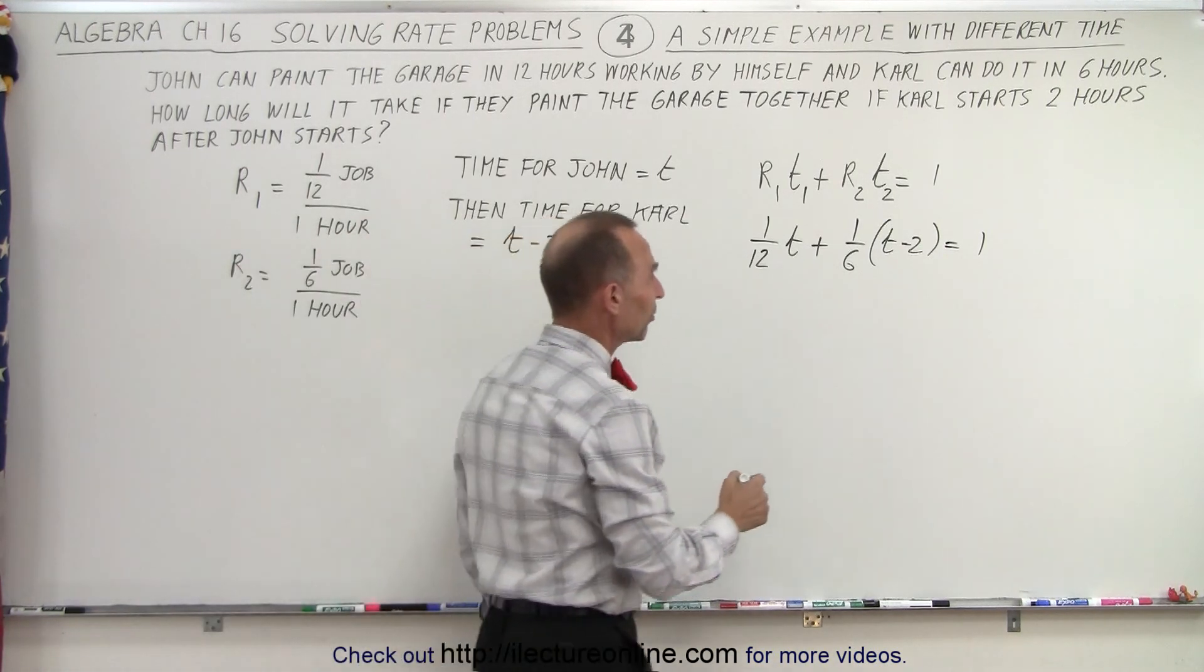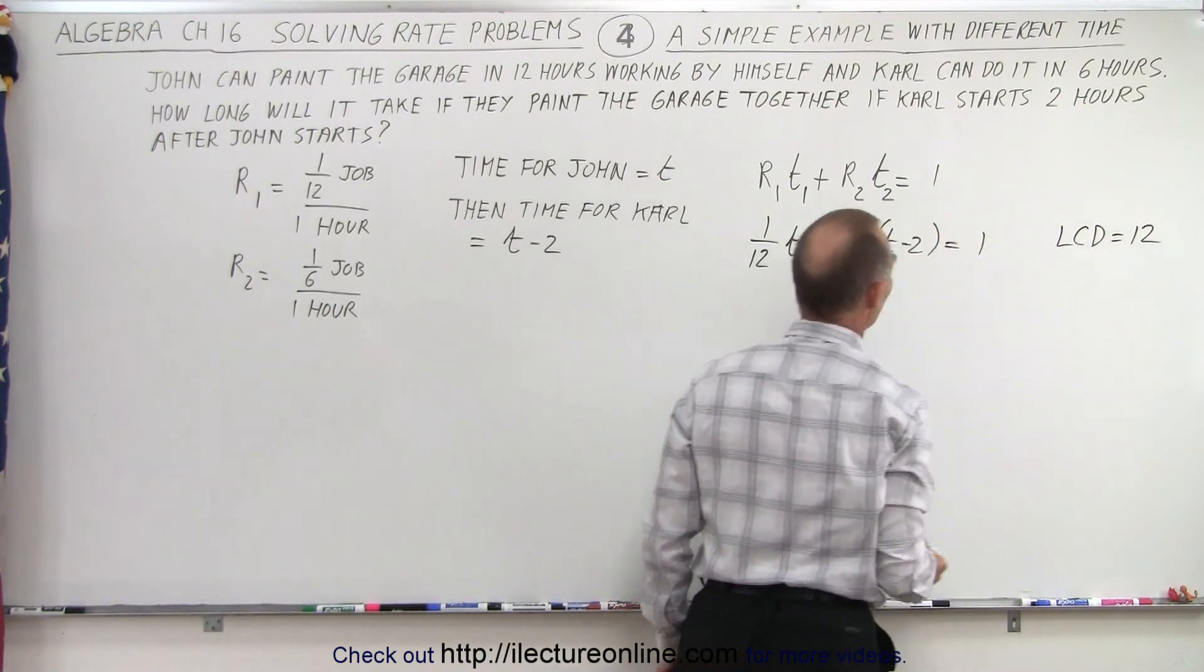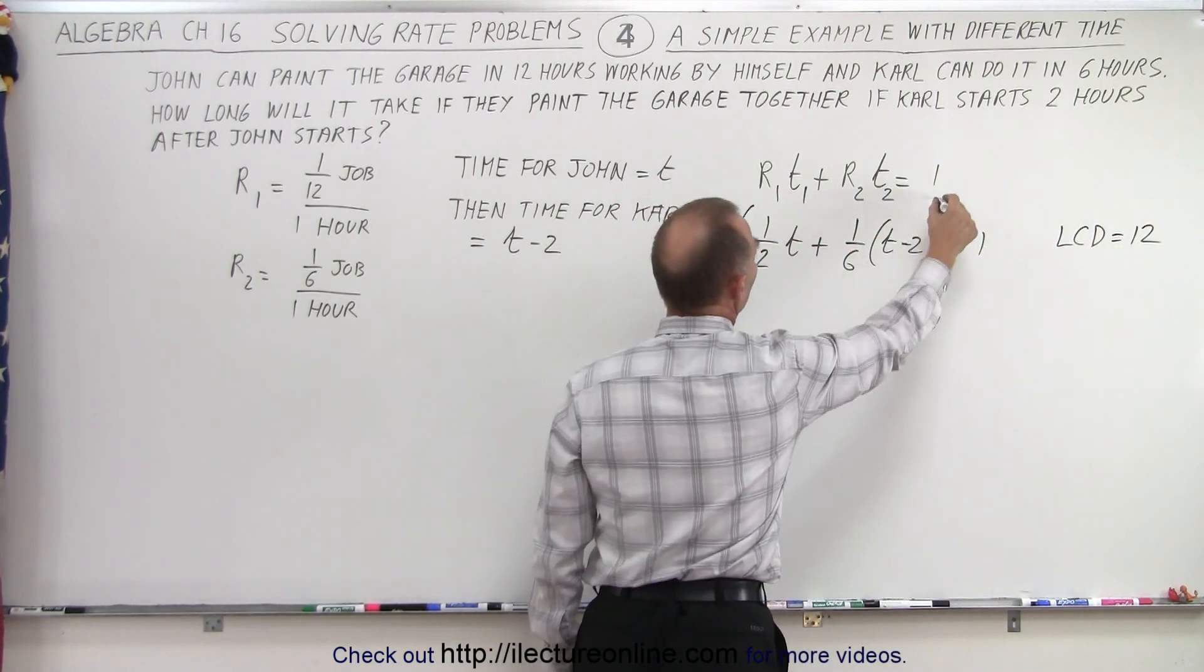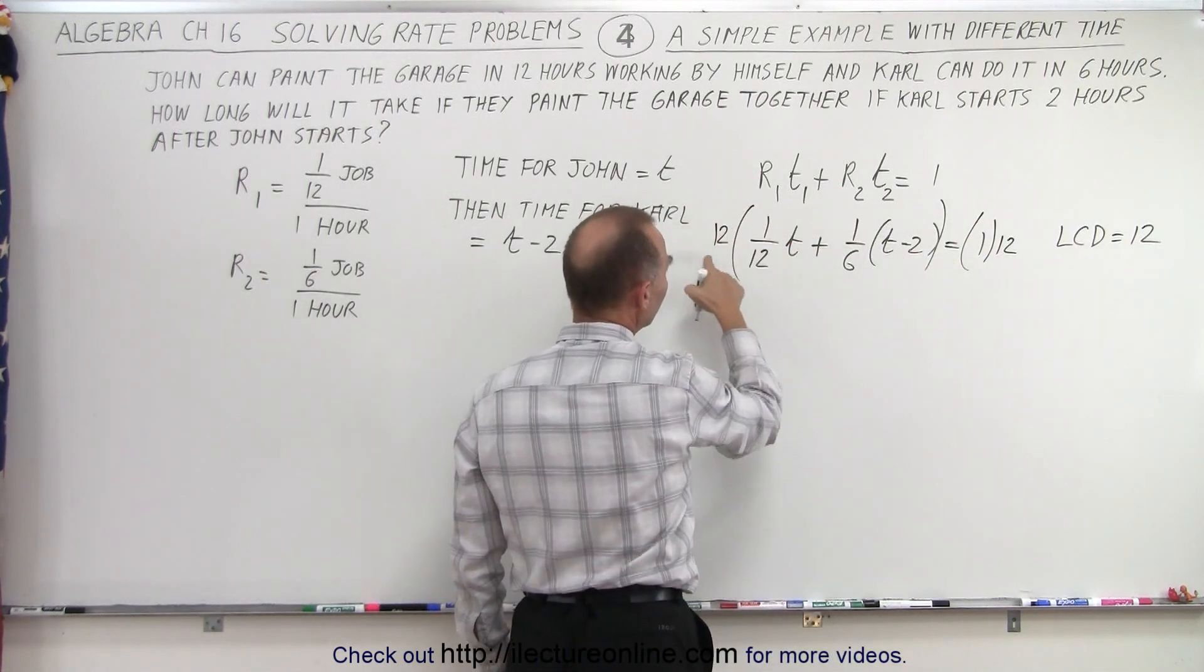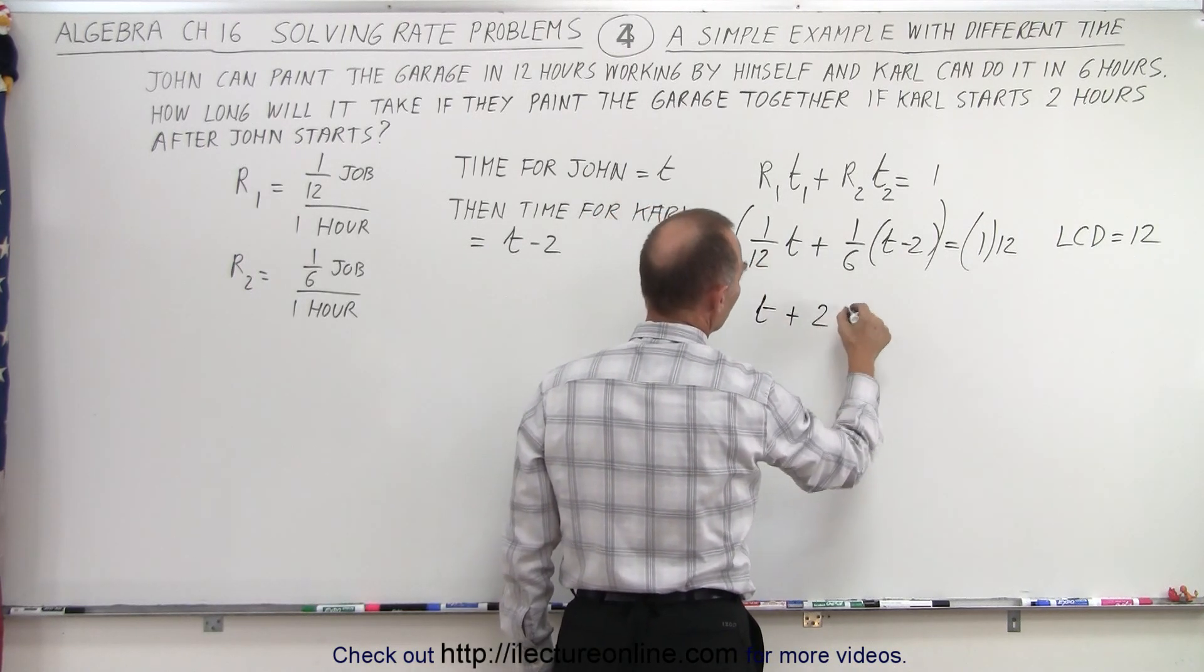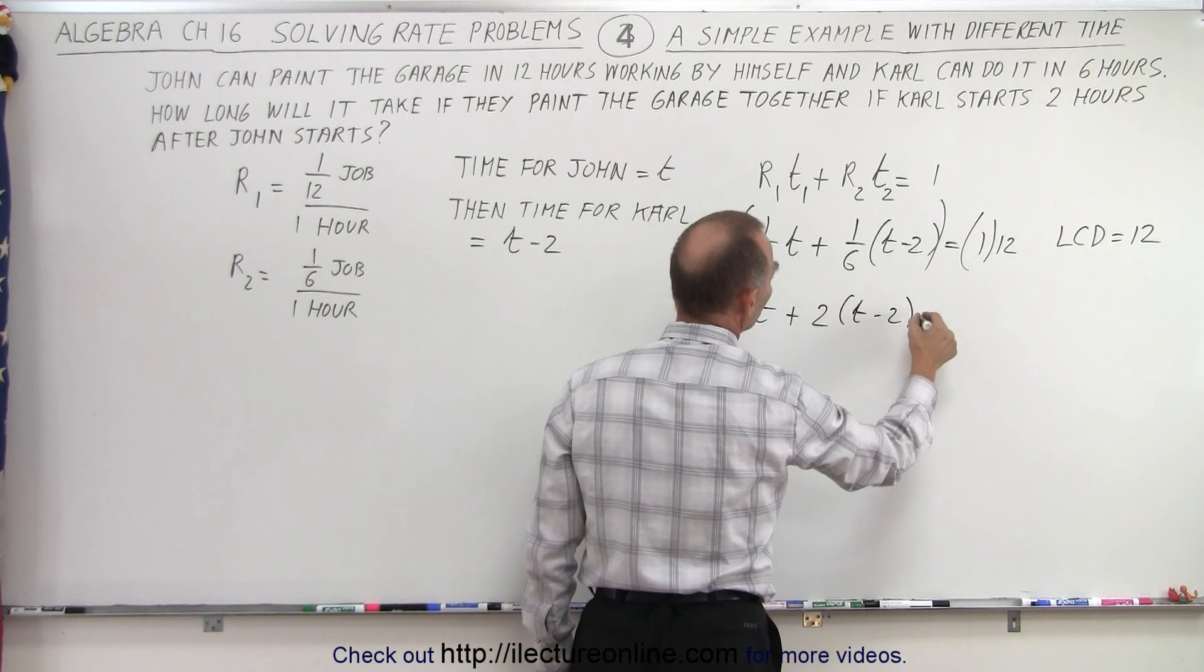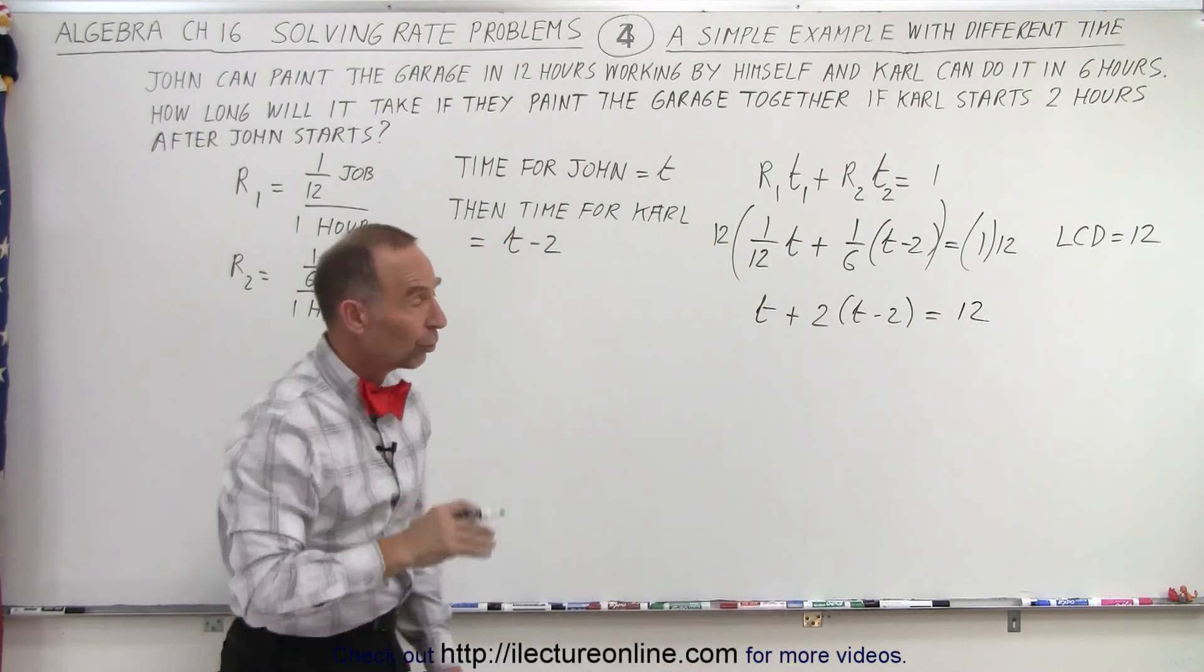We still want to multiply both sides by the lowest common denominator to simplify. In this case that's 12. So let's multiply both sides of the equation by 12. This cancels out and we end up with t plus 2 times (t minus 2) equals 12. Now we solve this equation for t.